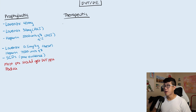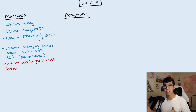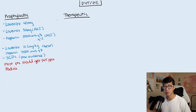Next, let's talk about therapeutic anticoagulation. This is for patients with a known DVT or PE who need full anticoagulation to treat it, or patients with AFib who need to be fully anticoagulated.